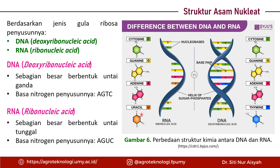Basa nitrogen penyusun RNA itu adalah adenin, guanin, dan sitosin, sama seperti DNA, tapi khusus pada RNA tidak ada timin karena timinnya diganti oleh urasil. Karena strukturnya berbeda, otomatis dari segi fungsi pun juga akan berbeda. Fungsi lebih detail dari masing-masing jenis asam nukleat akan dibahas di video learning selanjutnya.